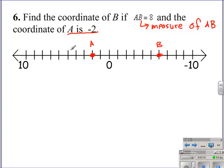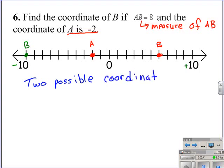And to find the other, we are going to move 8 units to the left, which would put us at, and that should be a negative 10 there. And the negative 10 should actually be a positive 10. So we have two possible coordinates for point B. One possible coordinate would be negative 10, and the other possible coordinate would be a positive 6. And that's because we can move either left or right on the number line.